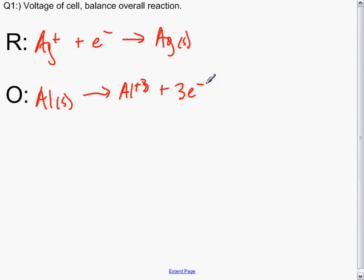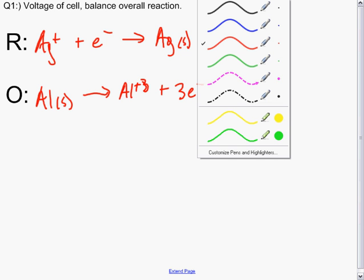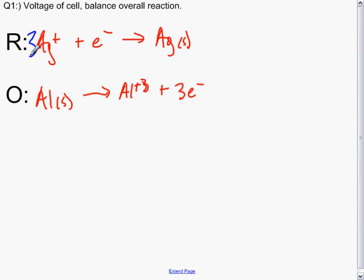We want the voltage of the cell and we also want to balance the overall reaction. In terms of balancing, we have three electrons on this side and only one here, so we need to cancel our electrons. So multiply everything in the silver reaction by three. So if we have three silvers, three electrons, and three silver solids, now the electrons on either side cancel and we can just add the reaction together.